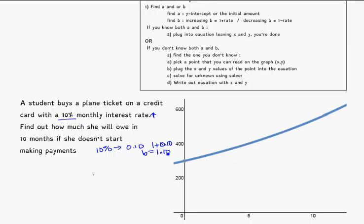The next thing I try to find is a. It doesn't tell me anything about that in the word problem, but if I look at the graph, I have it here. So a equals, I'm going to assume, halfway between 200 and 400, which is 300.